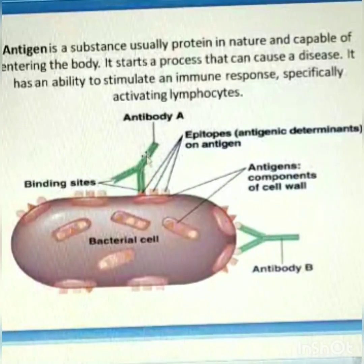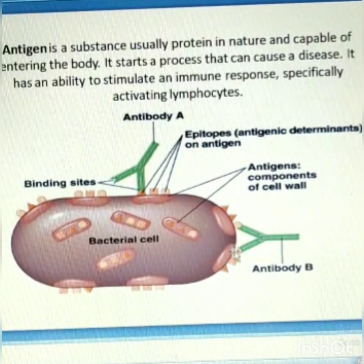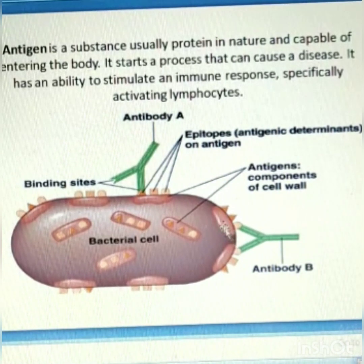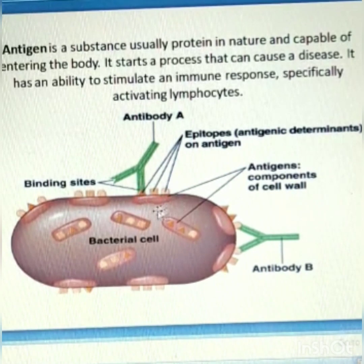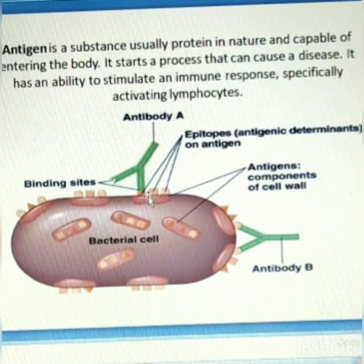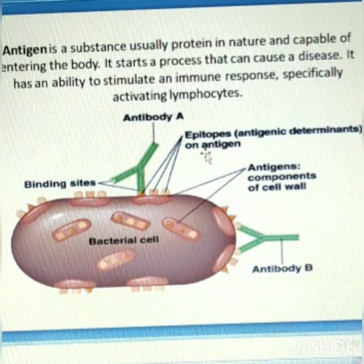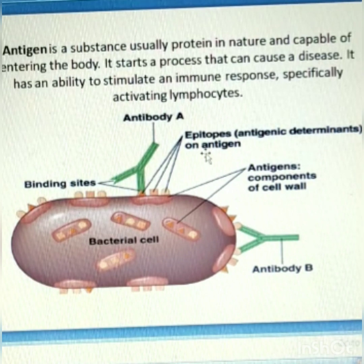If we consider the picture of an antigen, we find this is a bacterial cell. The sites that are antigenic determinants or epitopes on the antigen are specific for antibody A, and this structure is specific for antibody B. These structures, called epitopes or antigenic determinants, bind to the paratope — that is the binding site of the antibody.